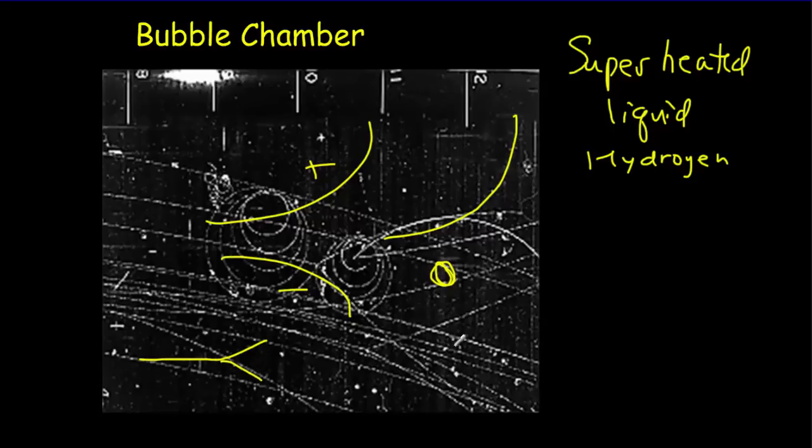In some places, the bubbles would be very thick, indicating a lot of slowing down was occurring. So all kinds of information could be obtained from these bubble chambers. Then scientists began to collide high-energy particles into one another, and that produced all kinds of new particles.